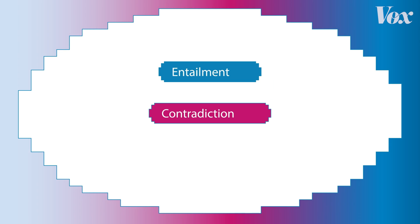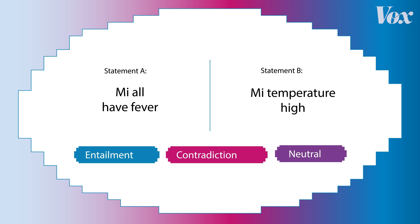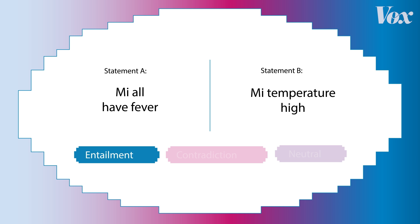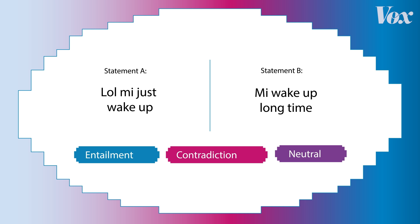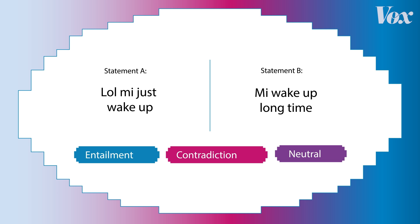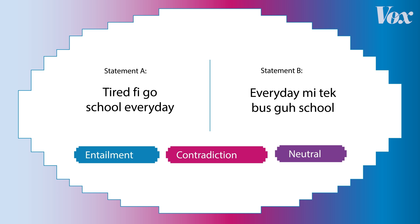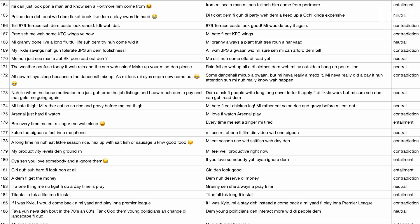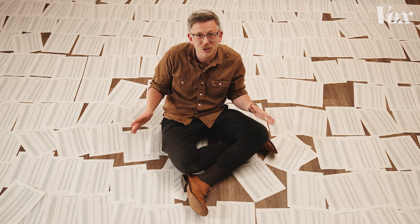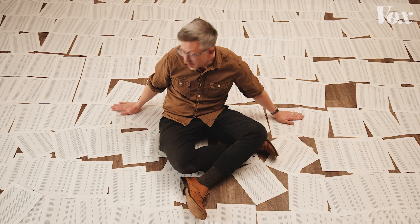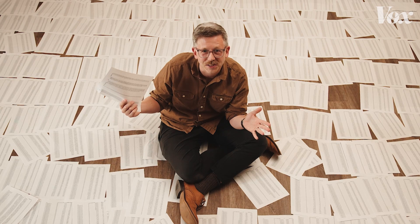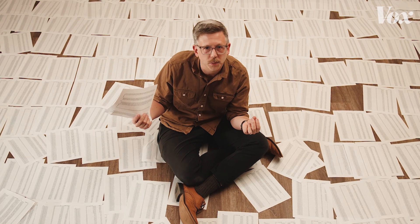Two columns. She labeled whether the statements entailed or agreed, contradicted, or were neutral. You can try it. In this one, A has a fever, B has a high temperature — so it's entailment; they agree. Try this one: entailment or contradiction? Contradiction. One more — neutral. The two statements don't really relate. She did that for almost 650 examples. And Jamaican Patois is not on my big list of Common Crawl languages.